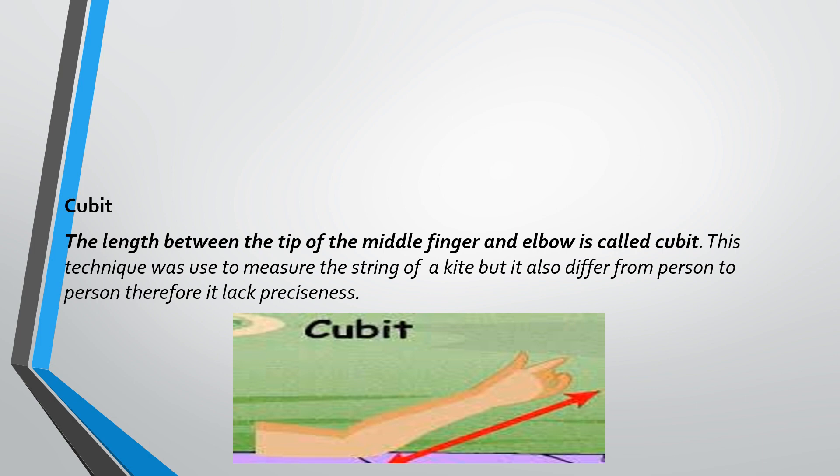Cubit. This technique was used to measure things like the length of string for a kite. But it also differed from person to person. Therefore, it lacks preciseness.